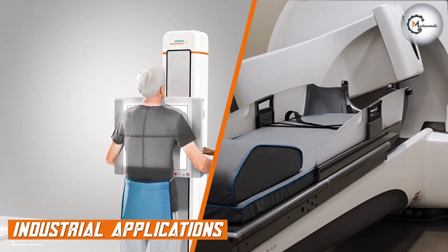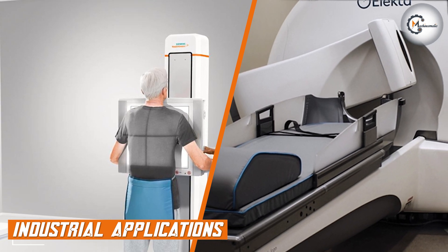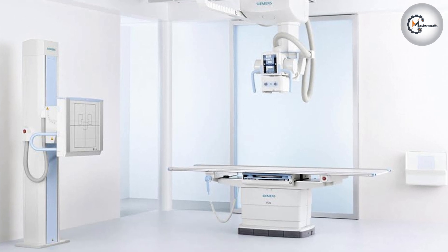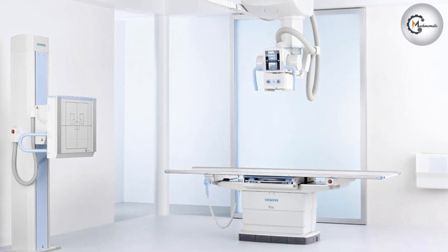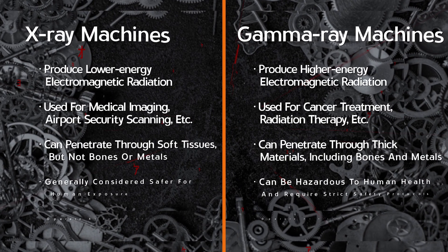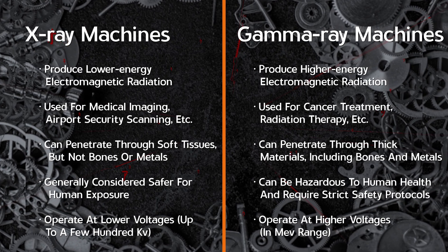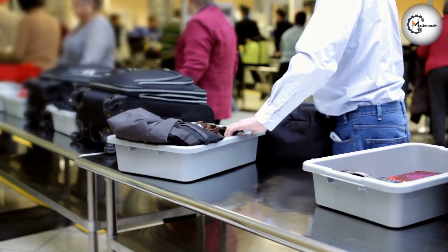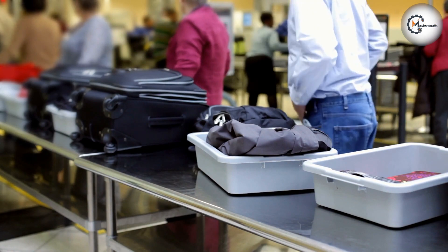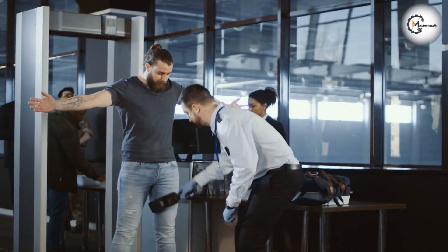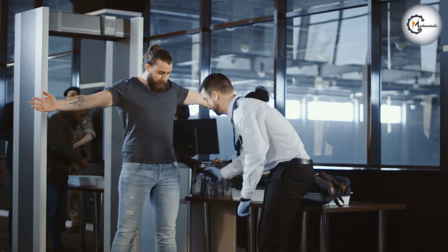Both x-ray and gamma-ray machines are used extensively in industrial settings to inspect materials and products. X-ray machines are commonly used to inspect welds, castings, and other materials for defects or structural weaknesses. Gamma-ray machines are used for similar purposes, but are typically more powerful and can penetrate thicker and denser materials. They are often used to inspect pipelines, vessels, and other large-scale industrial equipment for defects or corrosion. Gamma-ray machines are also used in security settings, such as airport security scanners to detect hidden objects or contraband.